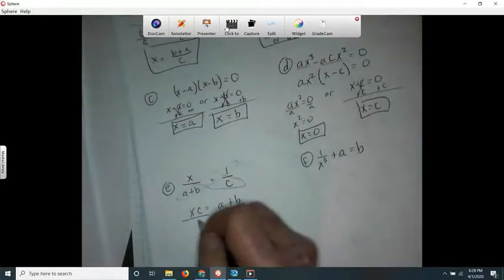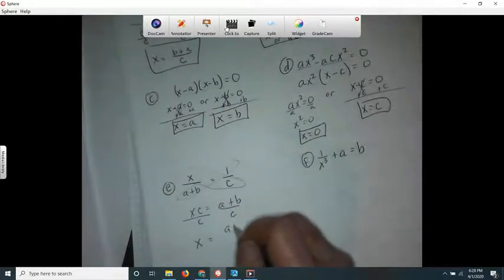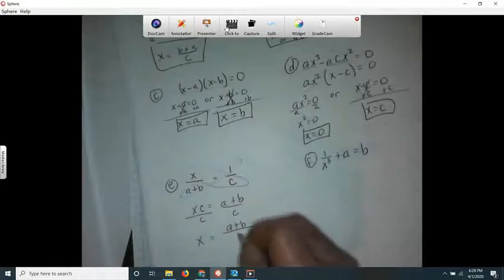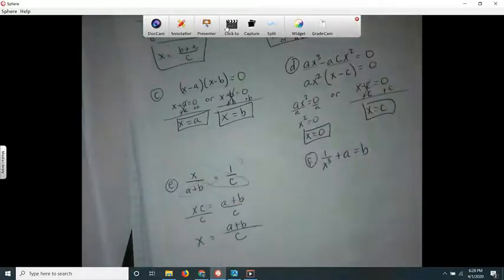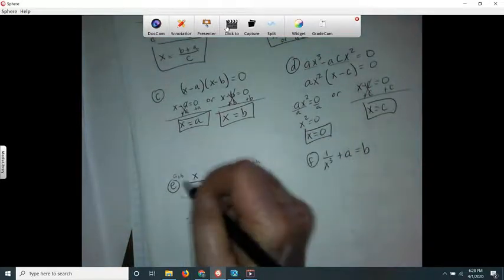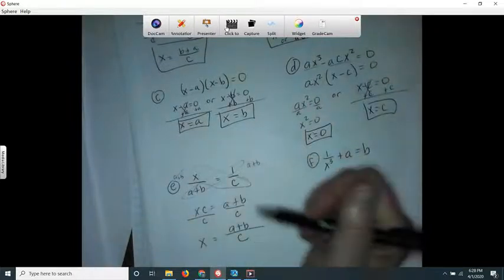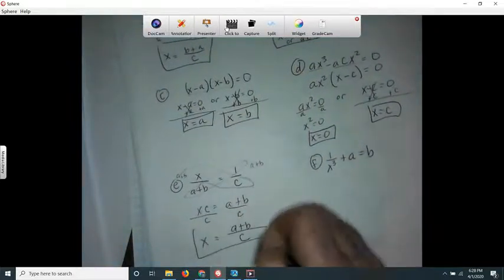Well, I'll do it with the cross products anyway. And I'll divide out the c. See, I didn't have to do cross products. I could have just multiplied a plus b, and these would cancel out, and I'd have x equals a plus b all over c. Or you can do cross products if you're just in the habit of it. There you go.